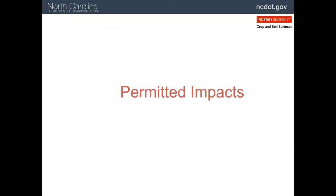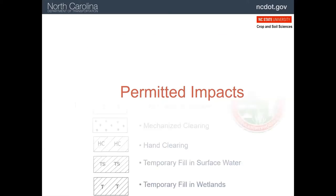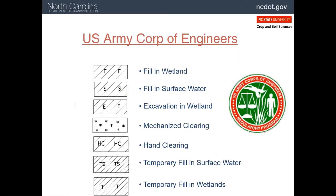As we discussed in the regulations section, any work in jurisdictional areas — streams, wetlands, estuaries, etc. — needs to get permits from the appropriate agencies. These symbols provide guidance as to what the U.S. Army Corps of Engineers has agreed to happening in their jurisdiction. Each of these will appear on the plan at the specific location on the project. For example, mechanized clearing means heavy equipment can be brought in, but hand clearing means just people with chainsaws, so no removal of debris.